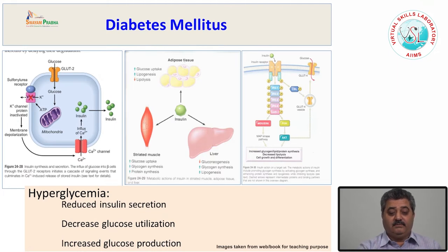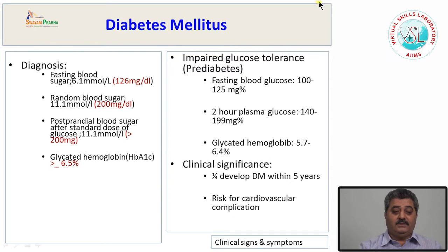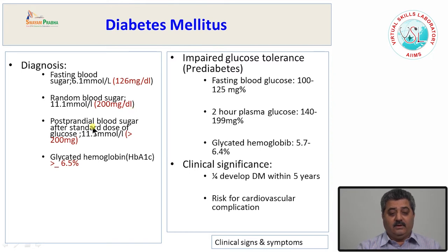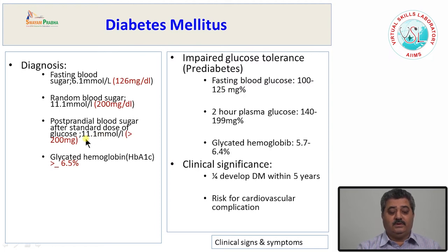Any of these three mechanisms may be involved in hyperglycemia. According to the American Diabetes Association and WHO, the defining criteria for diagnosis of diabetes mellitus are: fasting glucose level of more than 126 mg%, or random blood glucose more than 200 mg%, or after a loading dose of 75 grams of glucose, at the end of two hours the glucose level is more than 200 mg%.